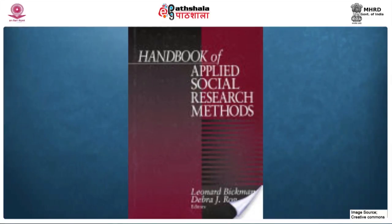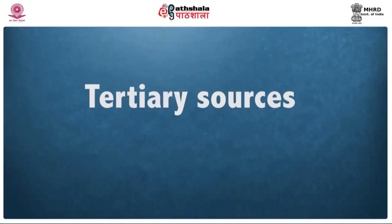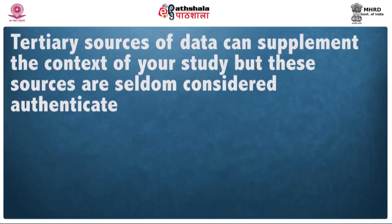Using secondary or existing data is advantageous in the sense that it incurs less expenditure and is also time-saving, which differentiates it from collecting primary data. Tertiary sources of data include a blend of primary and secondary sources of information available in some form of anthology format. As seen in Lunenberg's writings, common tertiary sources include bibliographies, encyclopedias, or any other item used primarily to locate primary or secondary data. Tertiary sources of data can supplement the context of your study, but these sources are seldom considered fully authentic.